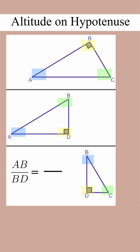First, we'll label any sides we know. Then we'll look at the ratio they asked us to find: AB over BD.